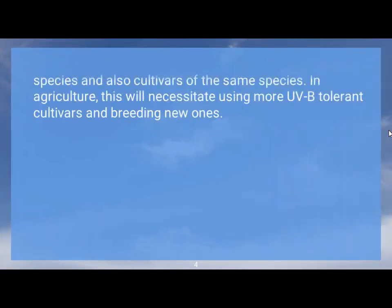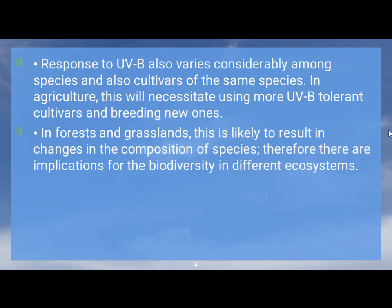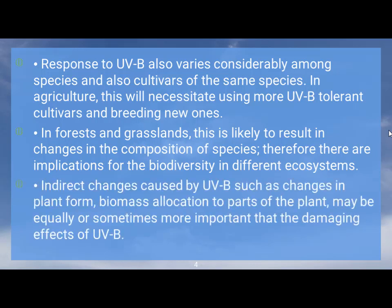Response to UVB varies considerably among species and also among cultivars of the same species. In agriculture, this will necessitate using more UVB-tolerant cultivars or breeding new ones. In forests and grasslands, this is likely to result in changes in the composition of species, with implications for biodiversity in different ecosystems.